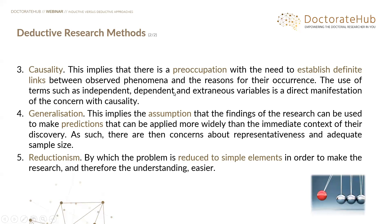Causality is absolutely essential to deduction — the idea that there is a connection between one thing and another. If you cannot find a connection, your hypothesis is proved not to be true — which may be a finding in itself. There's the idea of the black swan theory: black swans exist until you find they don't. Independent and dependent variables, and extraneous variables, are direct manifestations of concern with causality.